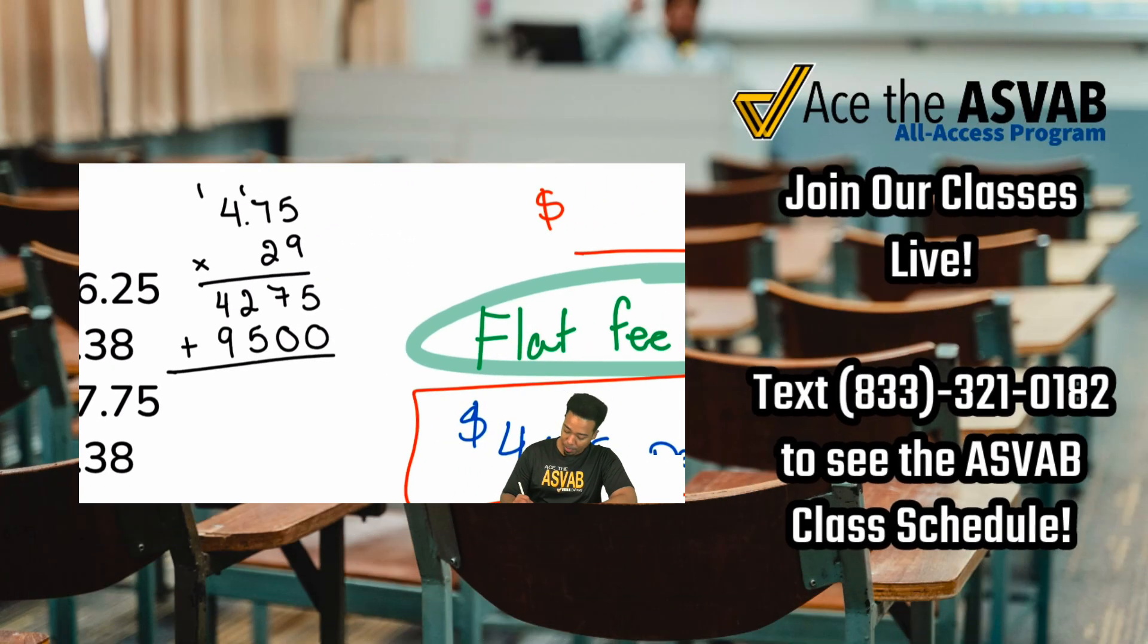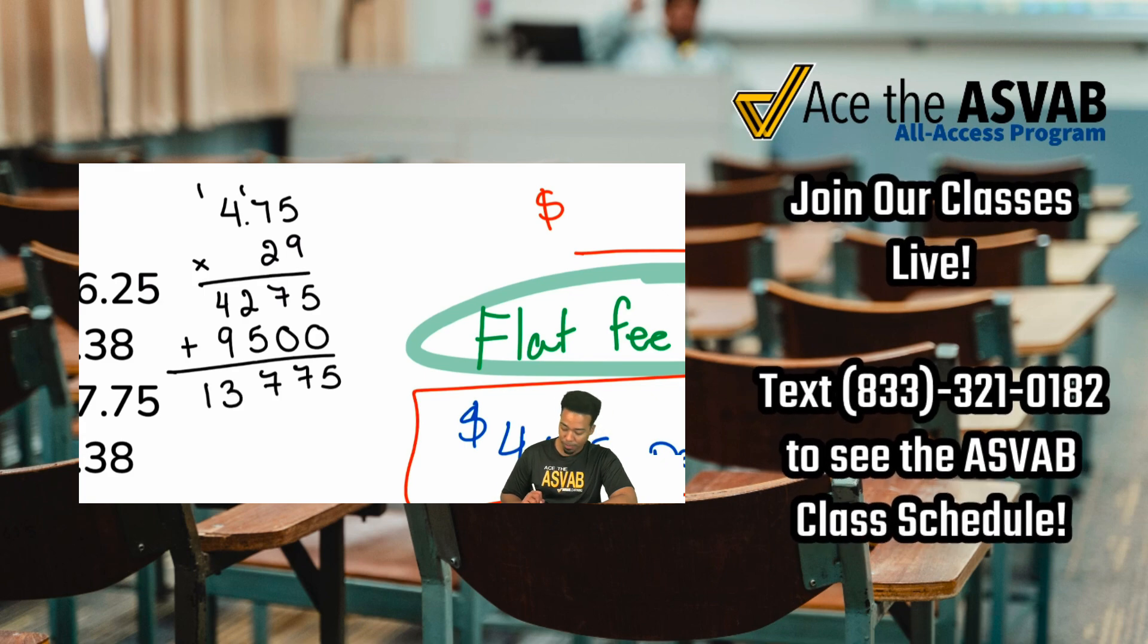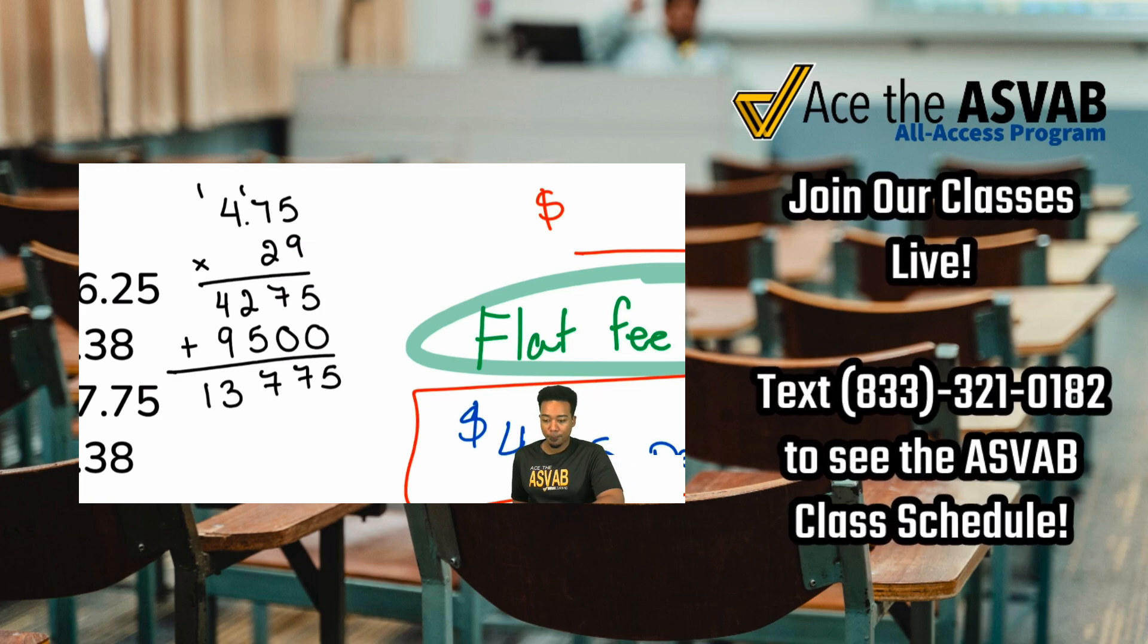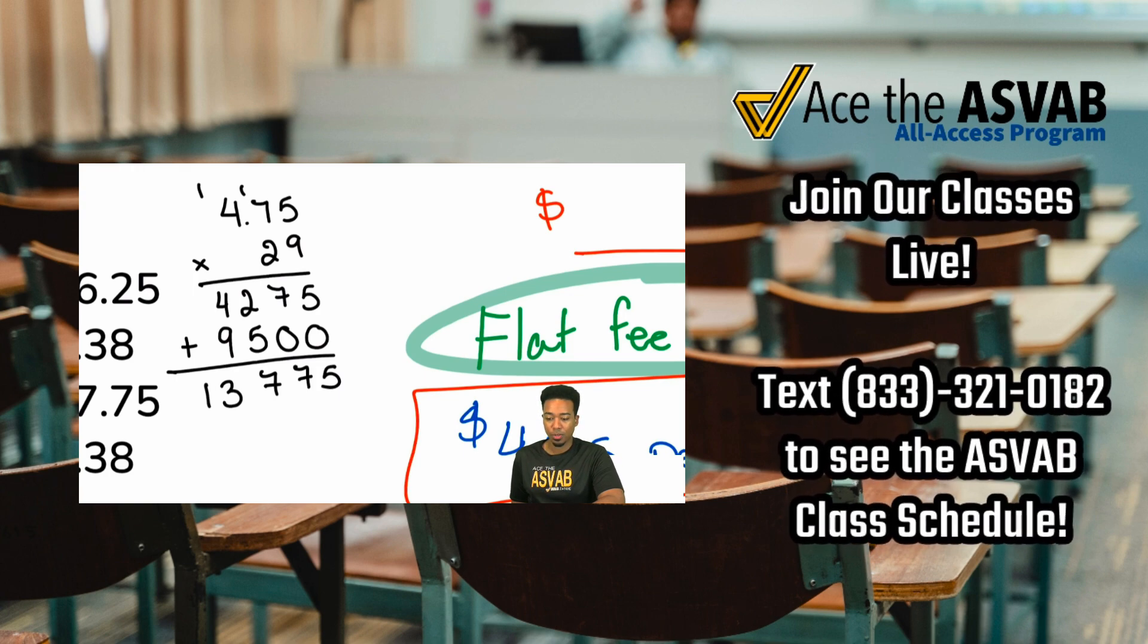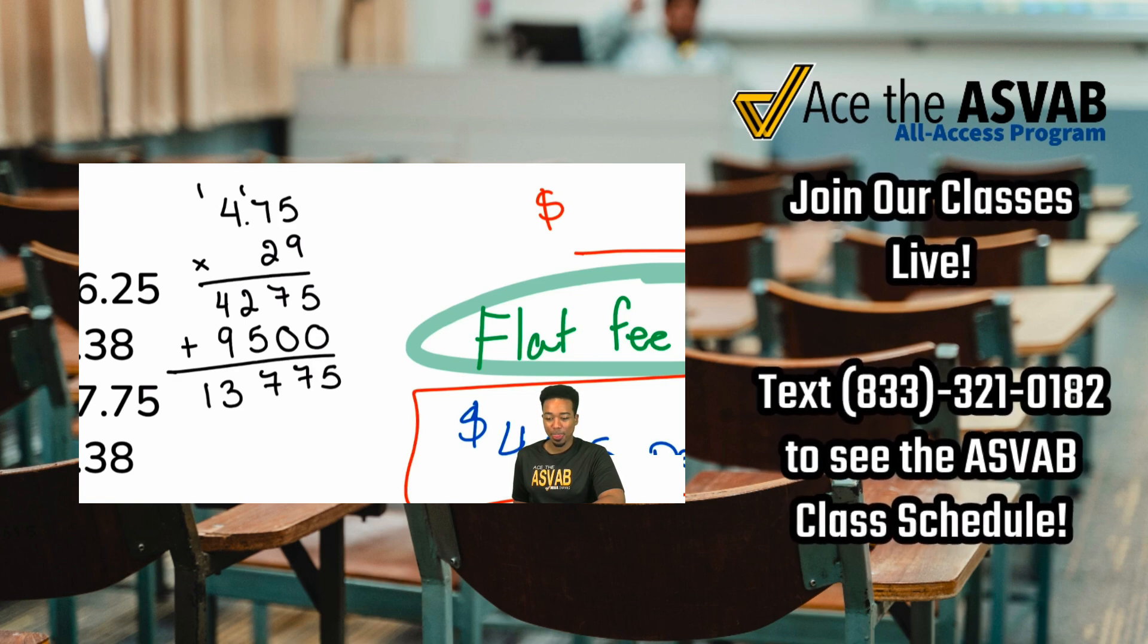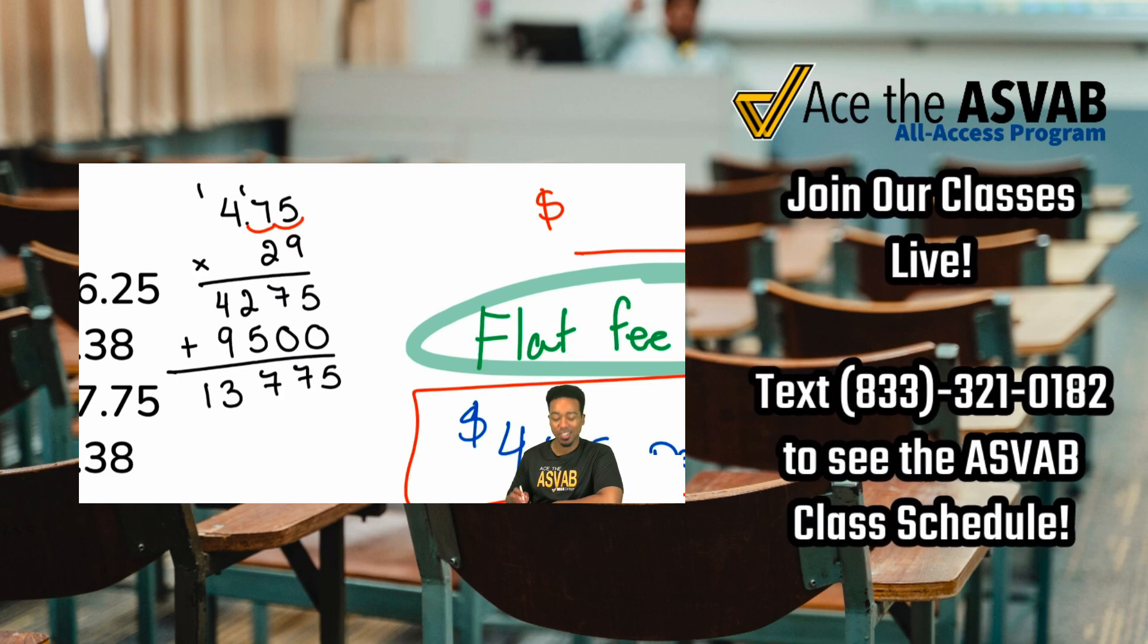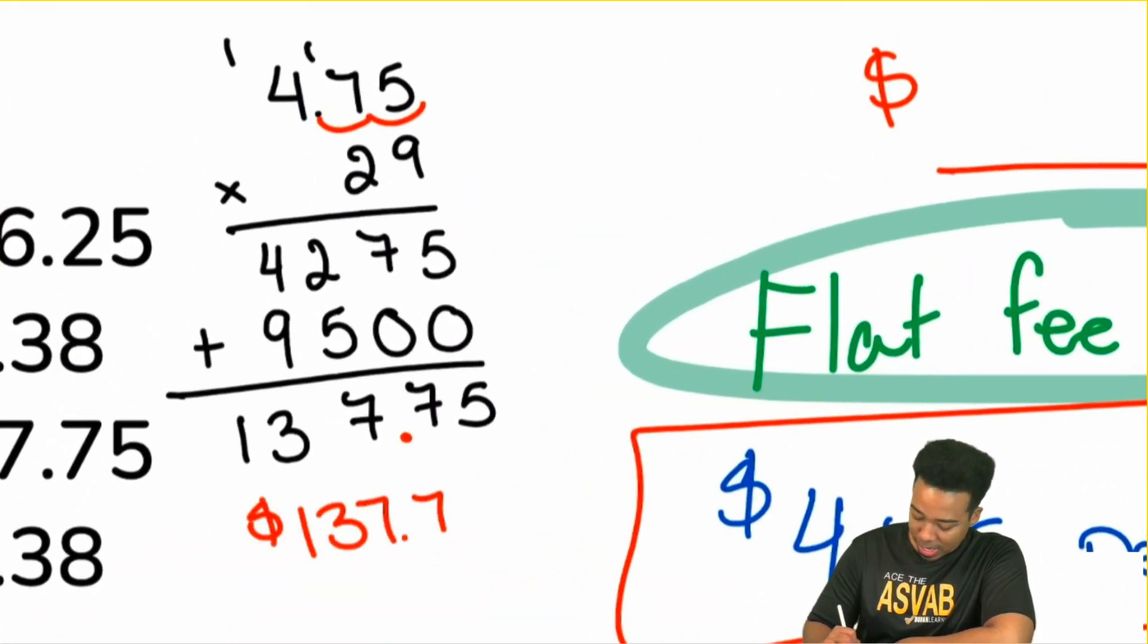Now from here, we add this back up and we get 5, 7, 7, and 13. My party people, what do we do at the end when we multiply by decimals? What do we do at the end again? What do we do at the end? That's right, we bring those decimal places back. We just bring it back nice and easy. We had 1, 2 decimal places here. So we'll bring 2 back here. That's going to be 137.75.